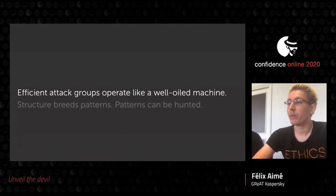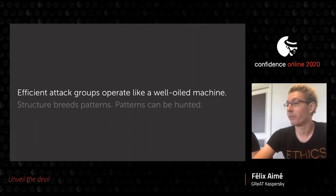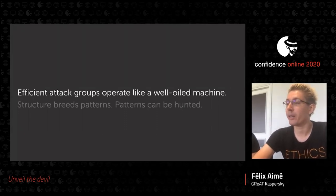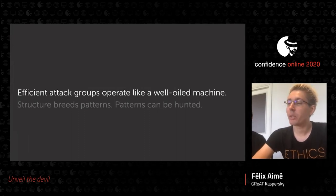Larger groups, possibly composed of different teams or interchangeable people, are difficult to coordinate unless they establish reproducible processes — not unlike large software companies. If Alice calls in sick, Bob must be able to take over, which implies documented, standardized ways of doing things. A great example is the 'Development Tradecraft DOs and DON'Ts' document leaked by WikiLeaks in Vault 7, which described standard guidelines for writing software used in operations. Once leaked or reconstructed, such guidelines become a signature or attribution matrix.